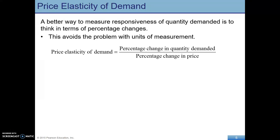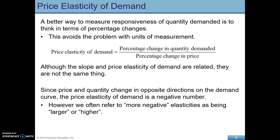This is going to avoid the problem of units, and this is the formula for price elasticity of demand. We're going to have a couple of different kinds of elasticity that we'll see later on, so that's why this is called price elasticity. It's just the percentage change in quantity demanded over the percentage change in price. Remember that formula for percentage change: new minus old over old times 100. We do that for quantity demanded and for price, which is on the bottom.